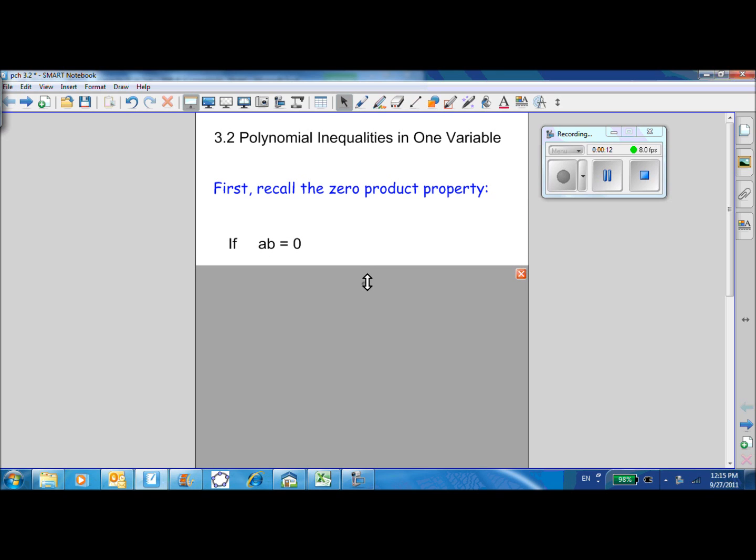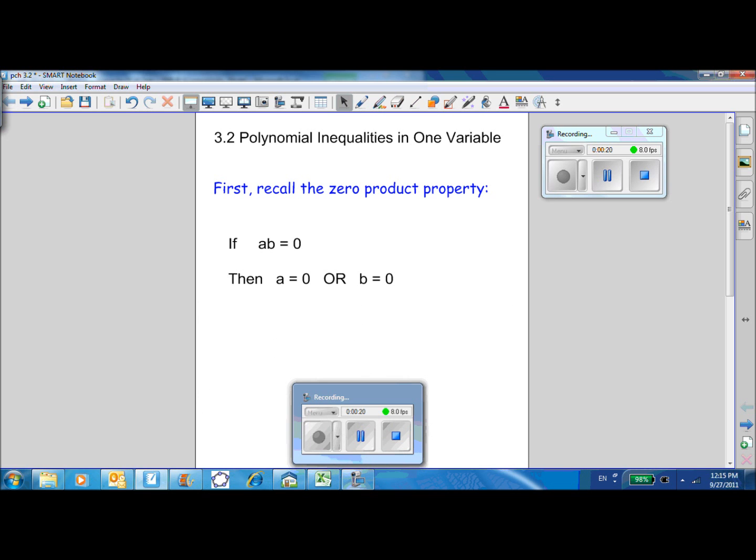If a times b equals zero, then one of the two must be zero. Then a equals zero or b equals zero. Very important rule for solving equations.